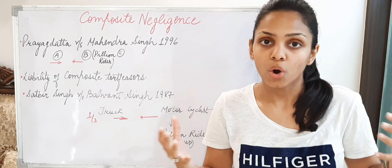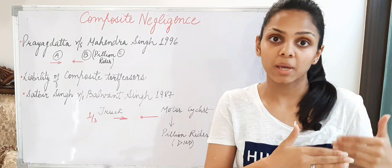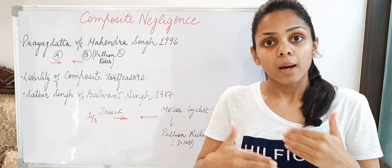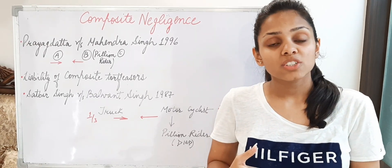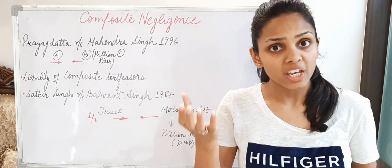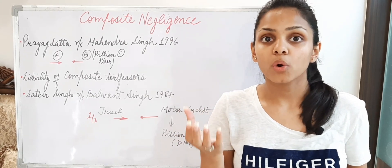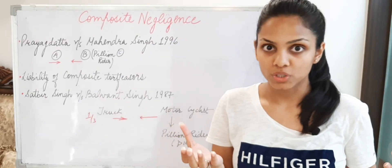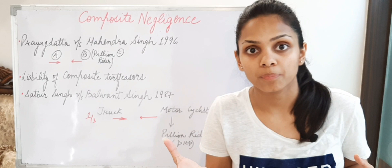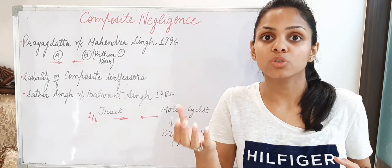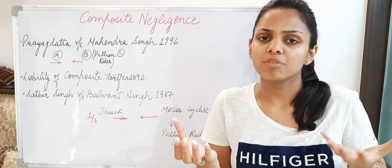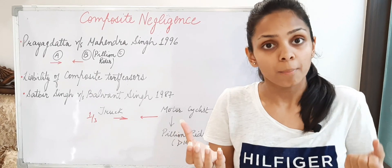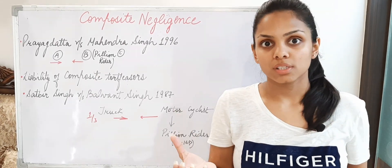Contributory negligence was explained in the previous video — watch that video as well. Now in composite negligence, what happens is that the plaintiff party — the aggrieved party — has no negligence on their part whatsoever. But only because of the negligent act of two or more other persons, this party sustains injury. There can be defendant number one, defendant number two — as many defendants or wrongdoers as required — but due to their negligent acts, the plaintiff sustains injury.